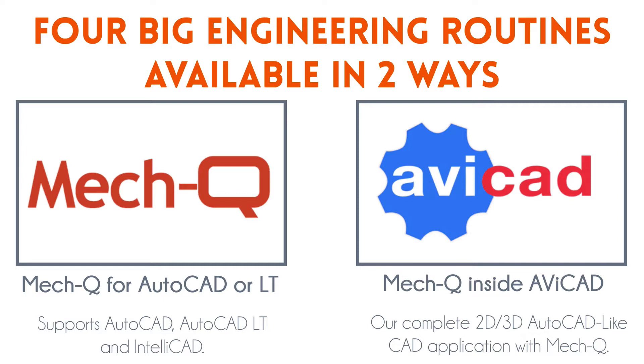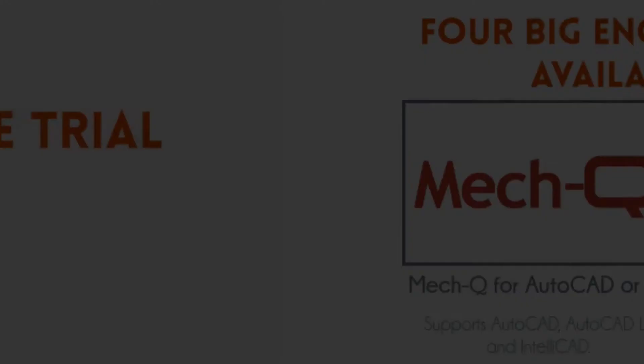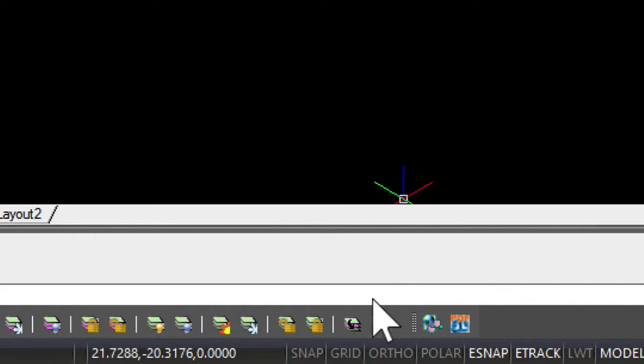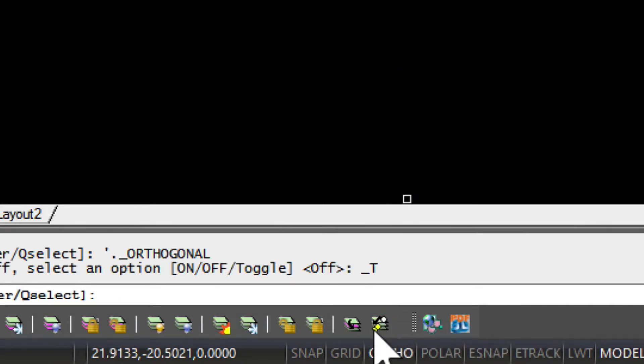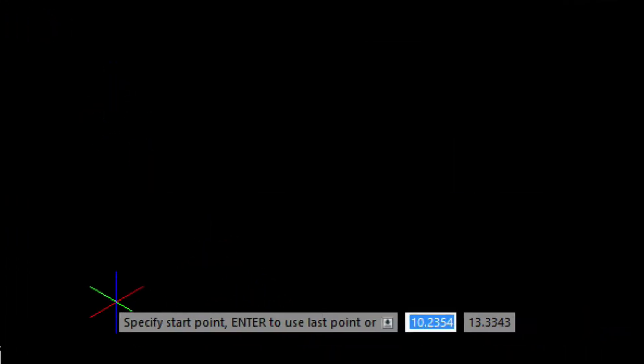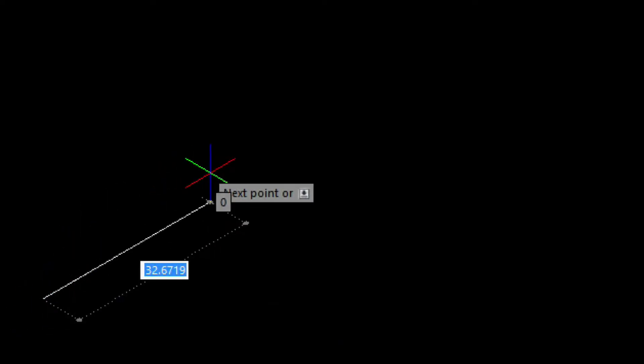But before we get started, let's first turn on the ortho command. This will restrict our cursor in the X, Y, and Z directions. I really recommend drawing a quick 3D sketch of the routing first. This will make the model even more simple.